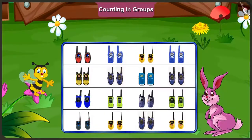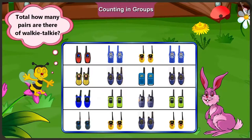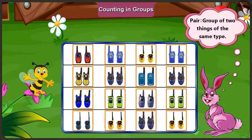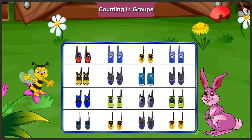Now let us look at another example. Bunny, can you tell me how many pairs of walkie-talkies are over here? A pair means a group of two similar things, isn't it? Yes, that is right, Bunny. Come on, let us count together.